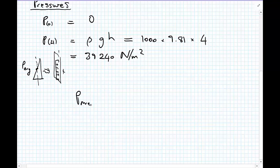So let's calculate our average pressure. P average is equal to 1 half of the pressure at 4, which was 39,240, plus the value at the top. And that gets us for the average pressure exerted on the wall, 19,620 newtons per meter squared.